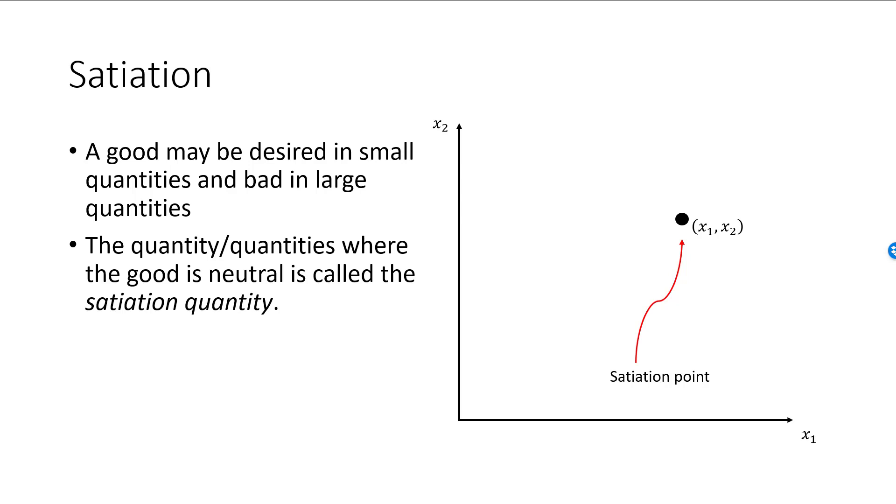This means that the satiation point is an indifference curve on its own. The remaining indifference curves will be elliptically shaped around the satiation bundle. For example, we will be indifferent between a bundle above and to the right of the satiation point, where we consume a little bit too much of each good, and a bundle below and to the left, where we consume a little bit less than the optimal of each. Bundles on an indifference curve further outside are worse than bundles on an indifference curve further inside.